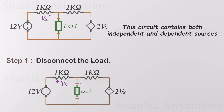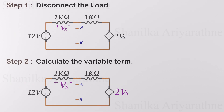Remove the load resistance and keep nodes A and B disconnected. Now we can analyze the circuit without the influence of the load. The next step is to calculate the variable term Vx, which controls the dependent sources in the circuit. In this example, the voltage of the variable source depends on the voltage across resistor R1.